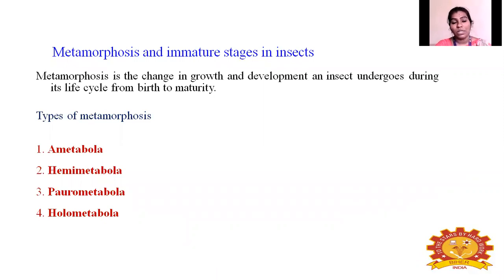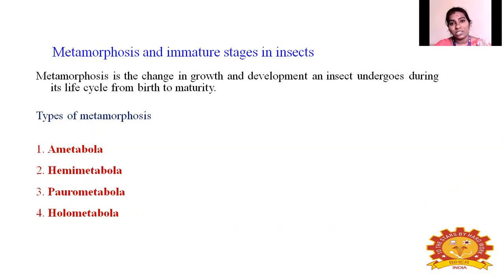So what is metamorphosis? Metamorphosis is about changes in growth and development of an insect which undergoes during their life cycle. So we can simply say, insects after they hatch out from the egg will keep on growing, eating and taking nutrients, and they will move from one stage to another stage, from egg to another stage. These changes are brought about by their growth and lead to development of an insect. The change in growth and development of an insect is called metamorphosis, which undergoes during their life cycle from birth to maturity.